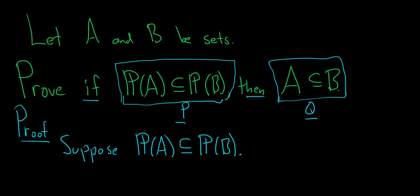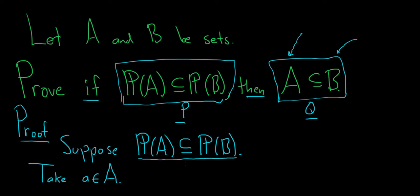To do that, we have to show that every element in A is also an element in B. So take little a in capital A. Now we have to show it's in B, so the natural thing to do is to use our hypothesis. Note that the set containing little a is a subset of A.